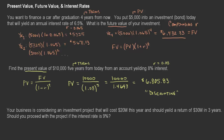Now for the third example: your business is considering an investment project that will cost $20 million — that's the present value. You expect it to yield a return of $30 million in three years. Should you proceed if the annual interest rate is 9%, R = 0.09? In all these cases, the interest rate is annual and the term is in years, though you could also do this quarterly or monthly.